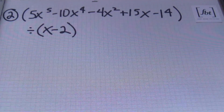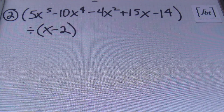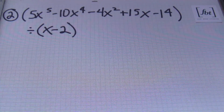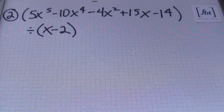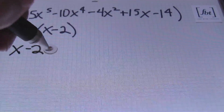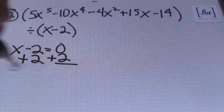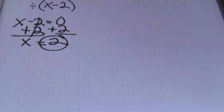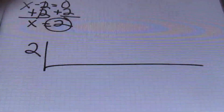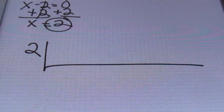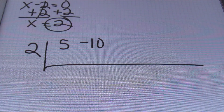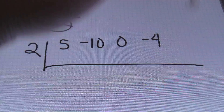Let's look at problem number 2. We have 5x to the 5th power minus 10x to the 4th power minus 4x squared plus 15x minus 14, all divided by x minus 2. The first thing you want to do is set this divisor, x minus 2, equal to 0. So my first step is to have x minus 2 equal to 0, and then solve for that. You'll end up with x equals to 2. Once you find out this value, this is going to be the actual value that you use in your synthetic division. I'll have 2 on the outside of the upside-down division symbol, and within it, I'll have all of my coefficients in descending order: 5, then negative 10, then since I didn't have an x cubed term I'll have 0, then negative 4, then 15, then negative 14.